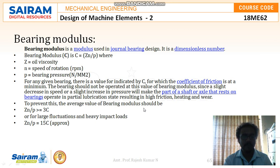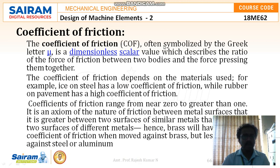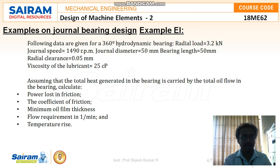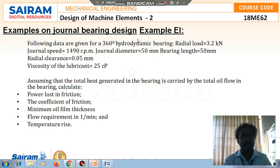The coefficient of friction, often symbolized by the Greek letter mu, is a dimensionless scalar value describing the ratio of the force of friction between two bodies to the force pressing them together. The quotient of friction depends on the materials used — for example, ice on steel has a low quotient of friction while rubber on pavement has a high quotient of friction. Values range from near zero to greater than one. It is an axiom of nature that friction between metal surfaces is greater between two surfaces of similar metals than between two surfaces of different metals — hence brass will have a higher quotient of friction when moved against brass, but less if moved against steel or aluminium.